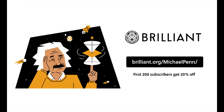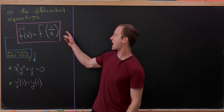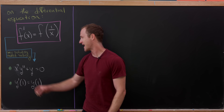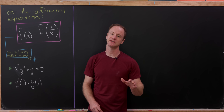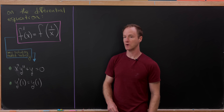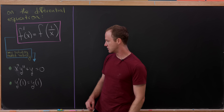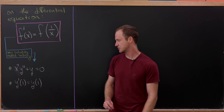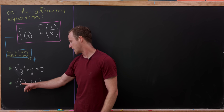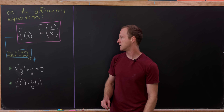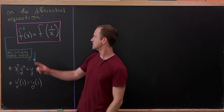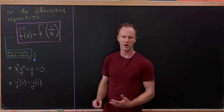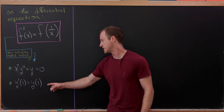On the last board we proved that our functional differential equation had to satisfy the more standard differential equation x squared y double prime plus y equals zero — a Cauchy-Euler equation. Let's also notice that it satisfies a semi-initial condition: y prime of 1 equals y of 1. That's because plugging in x equals 1 into f prime of x equals f of 1 over x gives f prime of 1 equals f of 1 over 1, and 1 over 1 is 1.